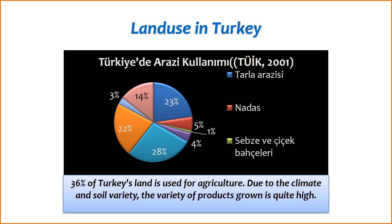6. Soil conservation — Terracing and contour farming: in hilly or sloping areas, farmers implement soil conservation techniques such as terracing and contour farming to prevent soil erosion. These practices help maintain soil structure and fertility.